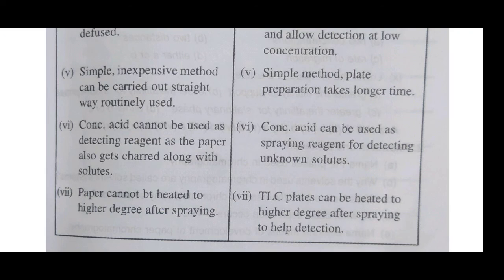Next MCQ: Rf value is the ratio of — first option: two concentrations; second option: rate of migration; third option: two distances; fourth option: either A or B. The answer is: Rf value is the ratio of two distances. This type of question may be asked in your examination.